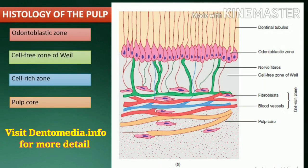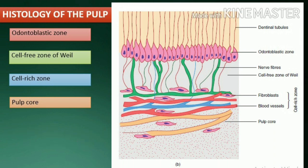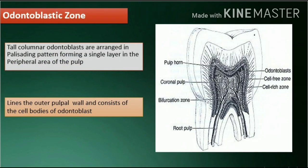Histology of the pulp. The coronal pulp, when viewed under the microscope, shows the following zones: odontoblastic zone, cell-free zone of Weil, cell-rich zone, and pulp core.